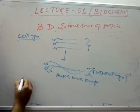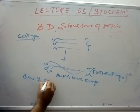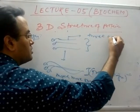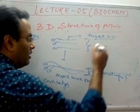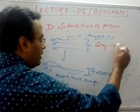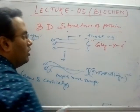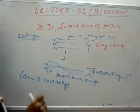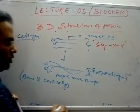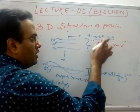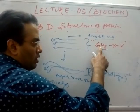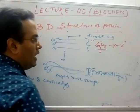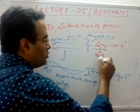Collagen is present in bone and cartilage, and it is made up of a signature amino acid sequence: glycine–X–Y. Wherever you see glycine–X–Y, you should understand it is talking about collagen. Glycine is fixed at the first position; the second position (X) can be any amino acid, and the third position (Y) can also be any amino acid.